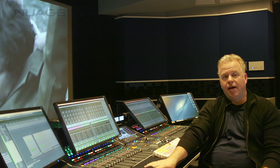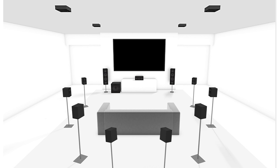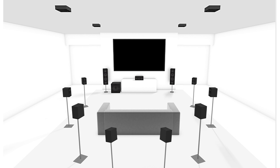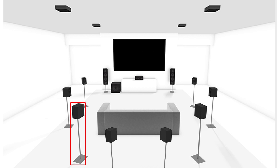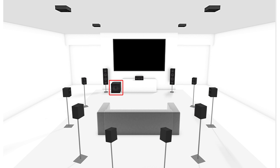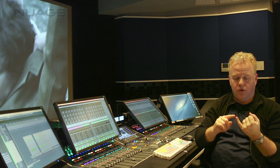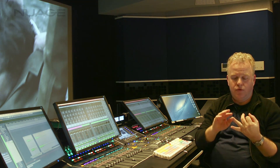Here at B-Blue Studios, we have an 11.1.4 configuration, with the addition of two extra rear side surround speakers. So we've got center, left, wide left, left side surround, left surround, and then left rear surround in the very back. You have the same complement on the other side, giving you 11 channels, plus the low frequency effects channel, and then the four ceiling channels. With that speaker complement, we're able to author for both home theater and for cinema.